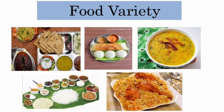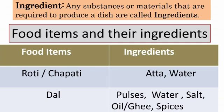What is an ingredient? Any substances or materials that are required to produce a dish are called ingredients. Let's see some examples of food items and their ingredients. Food items like roti or chapati are made up from dough of wheat flour and water.